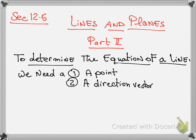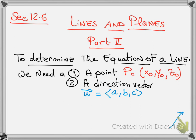Let me remind you: to determine the equation of a line, we need a point P given by coordinates (x₀, y₀, z₀), and a direction vector u equal to (a, b, c). The line which passes through point P and is parallel to vector u would be our line L.